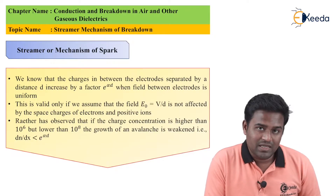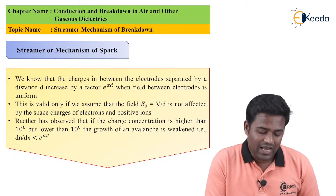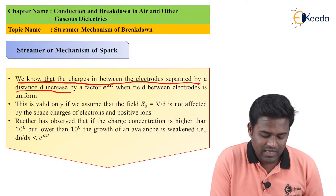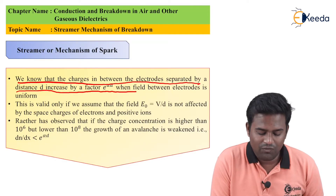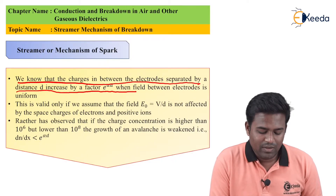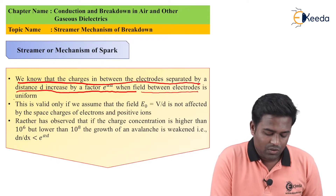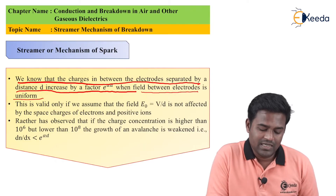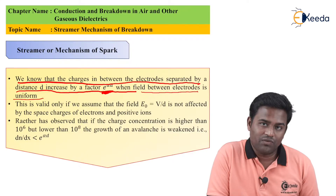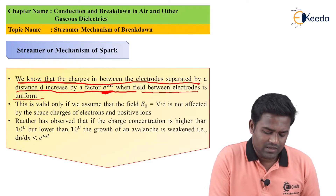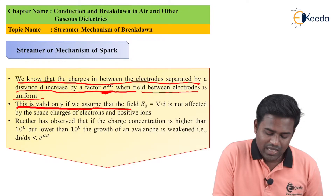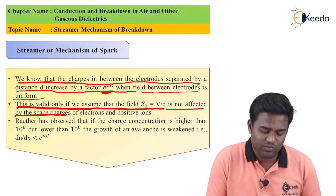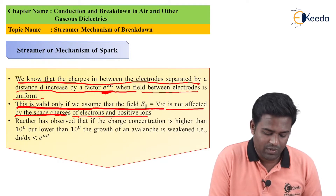When streamer mechanism or streamer spark will happen, the charges between electrodes separated by distance d increase by the factor e raised to alpha d. Here, e raised to alpha d means the streamer mechanism between electrodes is uniform. This is valid only if we assume that the field E0 = V/d is not affected by space charges — meaning there are no space charges from electrons and positive ions.